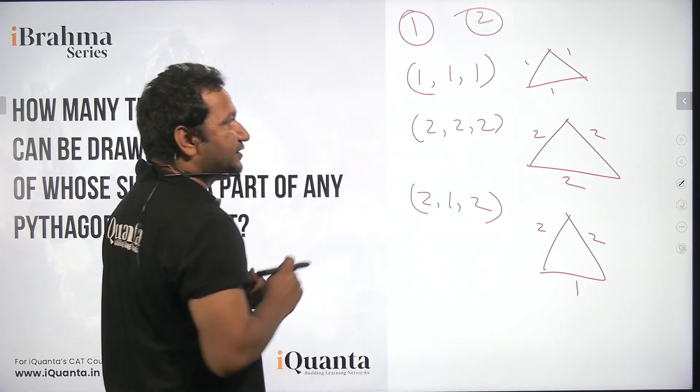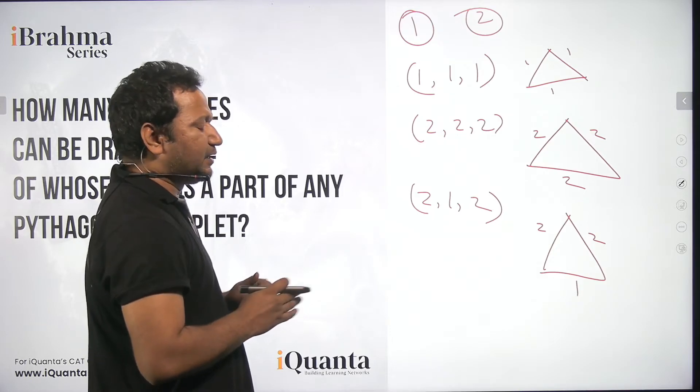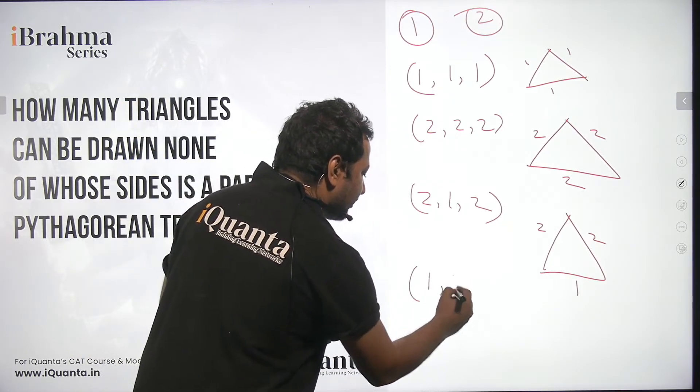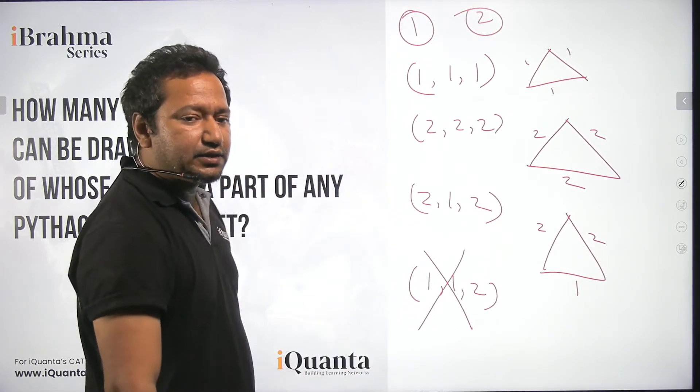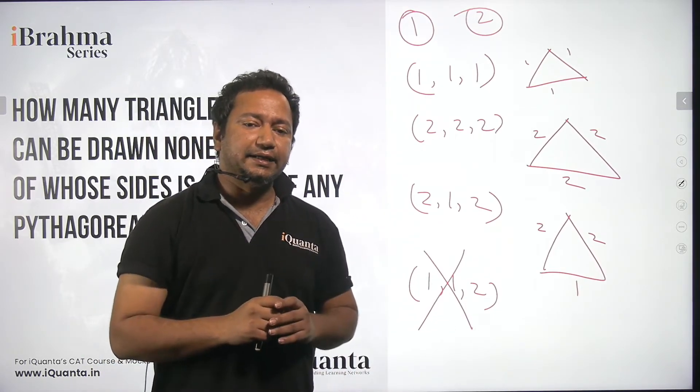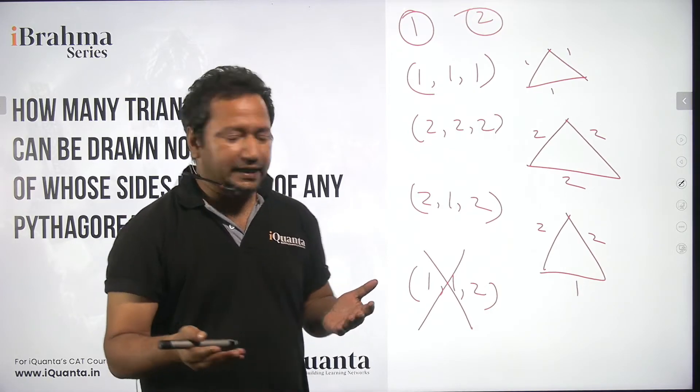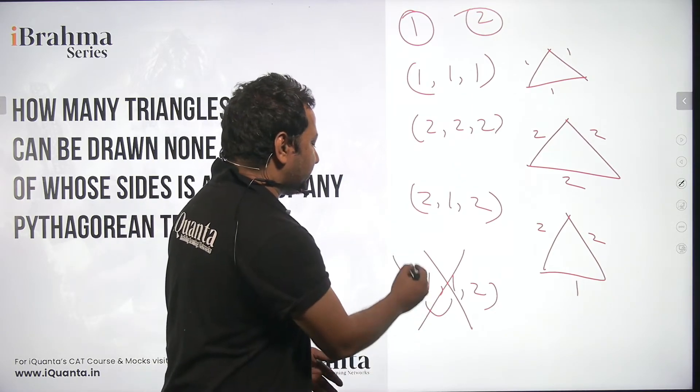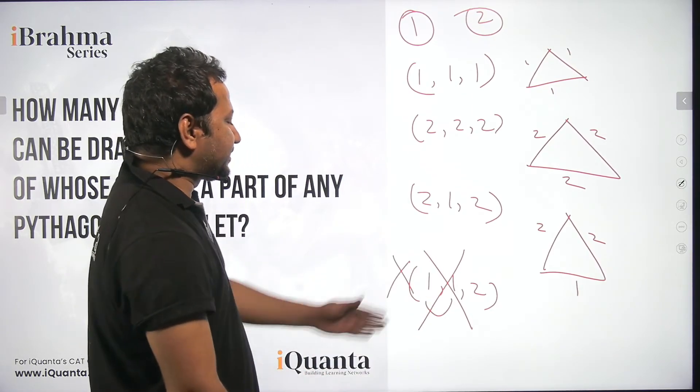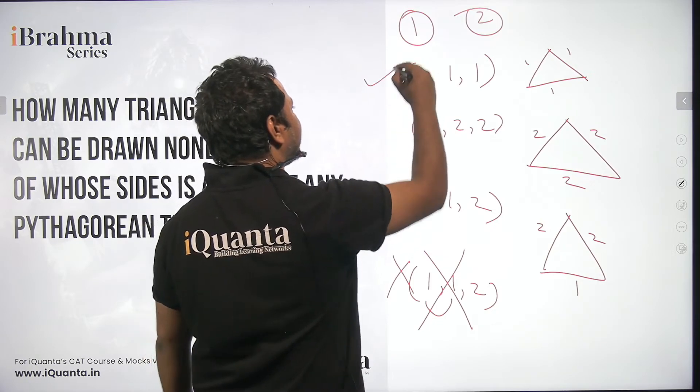So these three triangles is the answer. And if you try to assume 1, 1, 2 this will not be a triangle. This will not be a triangle because sum of any two sides should be greater than the third side. And in this case 1 plus 1 is equal to 2. It should be greater than 2. So of course this cannot be the consideration. This cannot be a triangle. So we have only three triangles here.